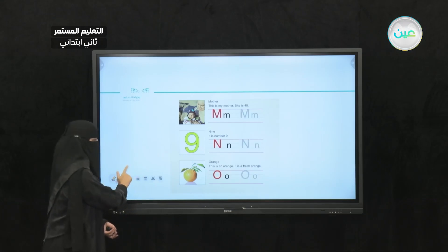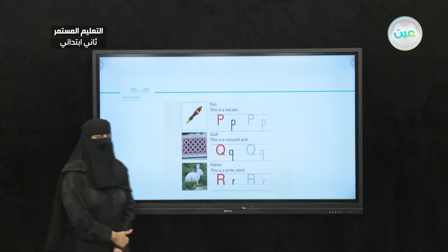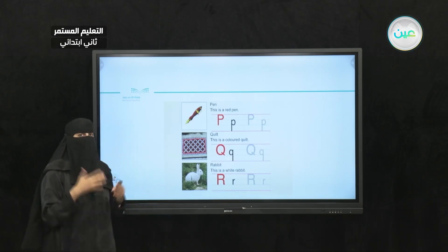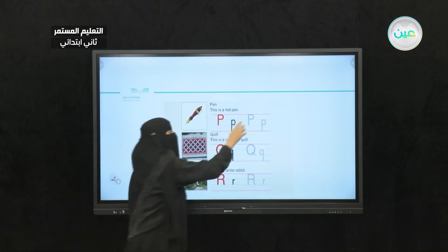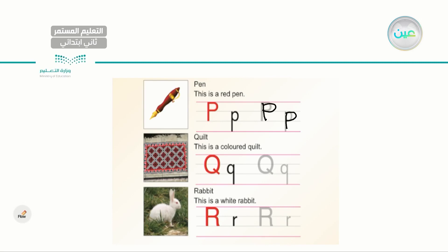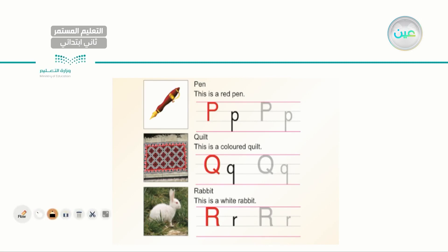Let's go to the next set. Here I have four letters. I have letter P — it's not B as in bag, it's P as in pencil, pen. Capital P and small p. Next one is letter Q. Capital Q and small q. The word is quilt. The last letter here is R. I have capital R and small r. Rabbit. Very good. Let's go to the next set of letters.